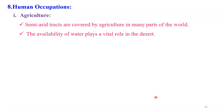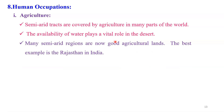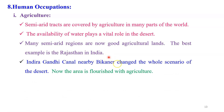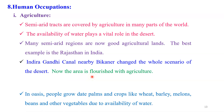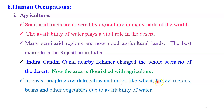If you are talking about human occupation — agriculture. Actually, in the arid area, agriculture is totally absent. But we have some small patches of agriculture in the semi-arid area, where the availability of water is very important. If water is available, around that oasis space, they plough some crops and do agriculture. The main semi-arid regions are now good agricultural land. The best example is in Rajasthan, India. Due to the Rajasthan Indira Gandhi Canal, this area is really flourished. Near Bikaner, you will observe that agriculture has really developed due to the introduction of irrigation water. In the oasis, people grow dates and crops like wheat, barley, melons, beans, and other vegetables due to the availability of water.